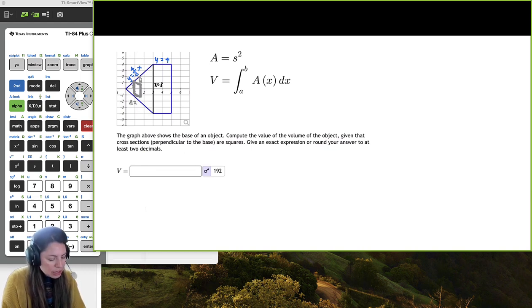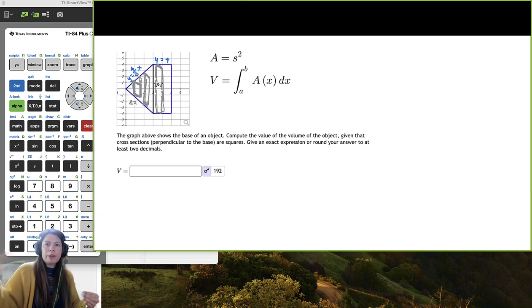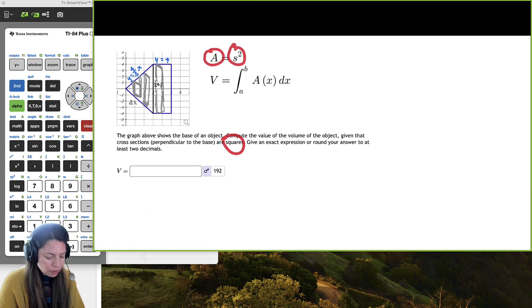So then when it reaches x equals 3, notice your squares just become constant. They're the same area for each square. It's not changing. Whereas over here in this left side of x equals 3, notice the size of the square, one of the sides is changing. So here we can see that the area of the cross section is going to be the area of the square, which is just s squared.